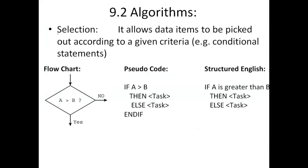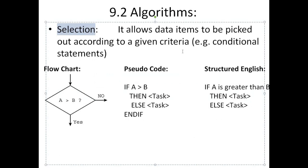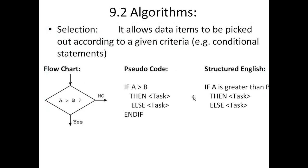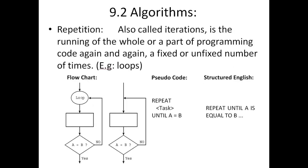Selection means decision-making or conditional statements — it allows data items to be picked out according to given criteria. In flowchart and pseudocode we use IF, THEN, and ELSE. In structured English we also use IF, THEN, and ELSE keywords, but we don't write END IF or mathematical comparison operators. For example, instead of a formal condition, in structured English we simply write: 'if a is greater than b'.